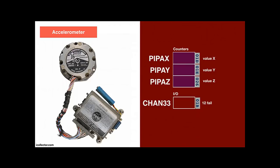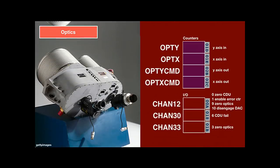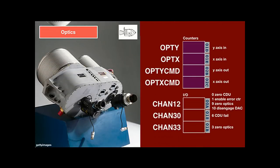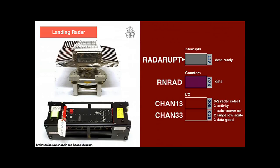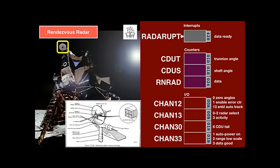Using the gyroscope, the spacecraft always knows its attitude — that is, its orientation in space. The accelerometer measures acceleration forces on the three axes; the three values can be read from the Piper counters. The optics on the command module are used to measure the relative position to celestial bodies. The computer uses the optics command counters to move the optics toward a star and will read in the astronauts' fine-tuning through the optics counters. The landing radar sits at the bottom of the lunar module and measures the distance to the ground — the radar interrupt is triggered whenever a new measurement is available, and the R-in-red counter contains the new value.